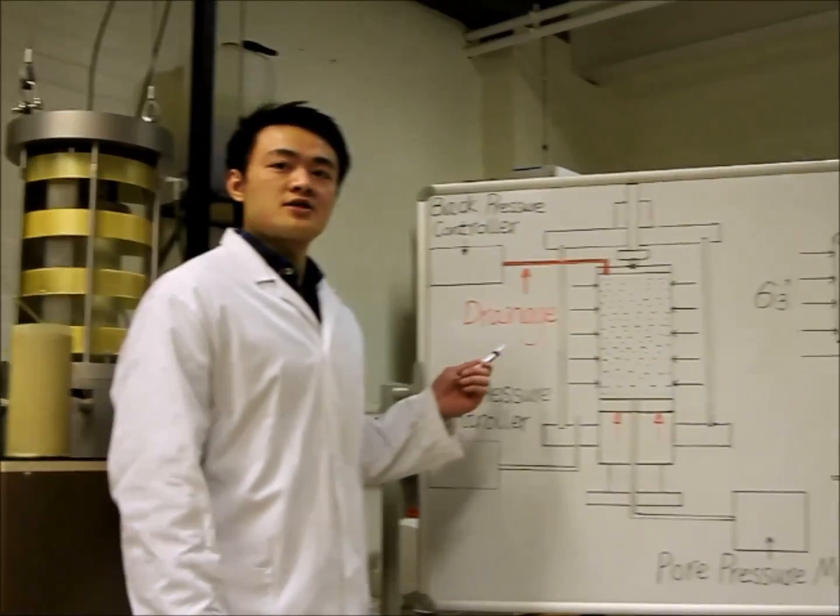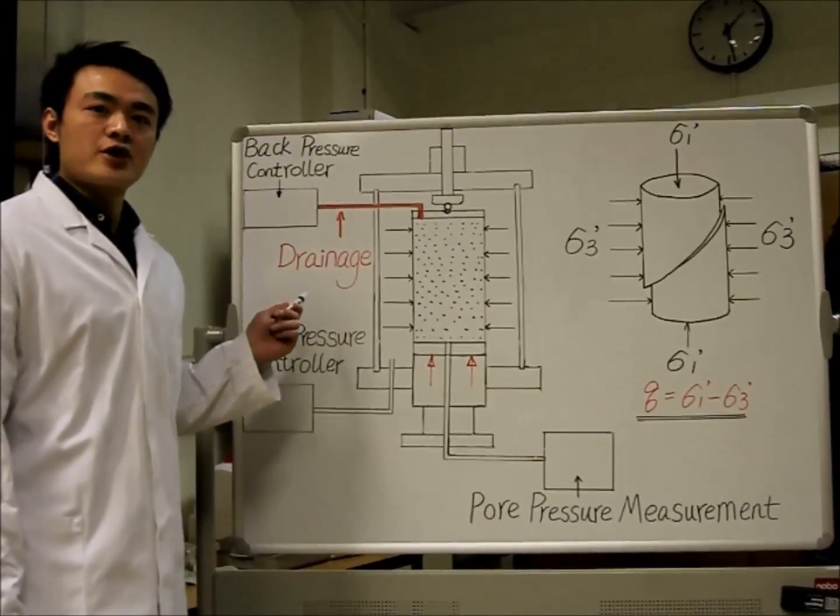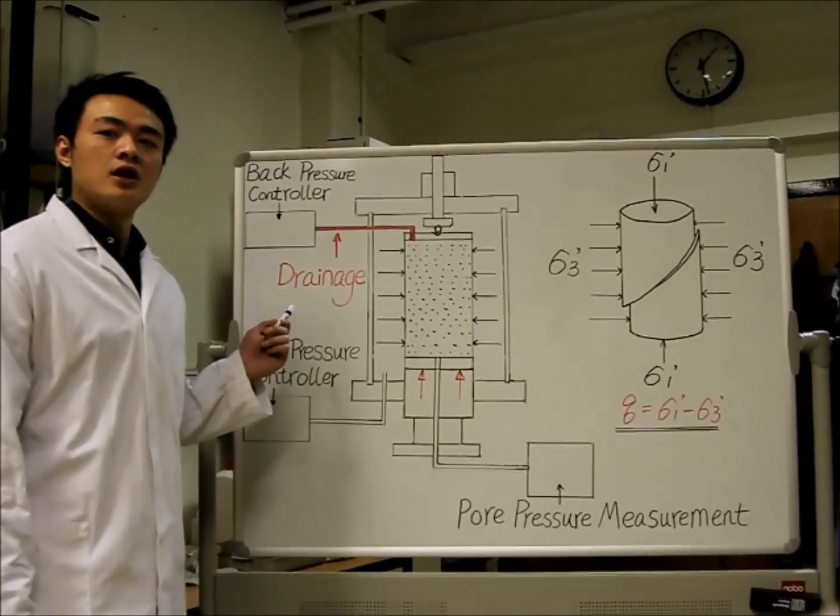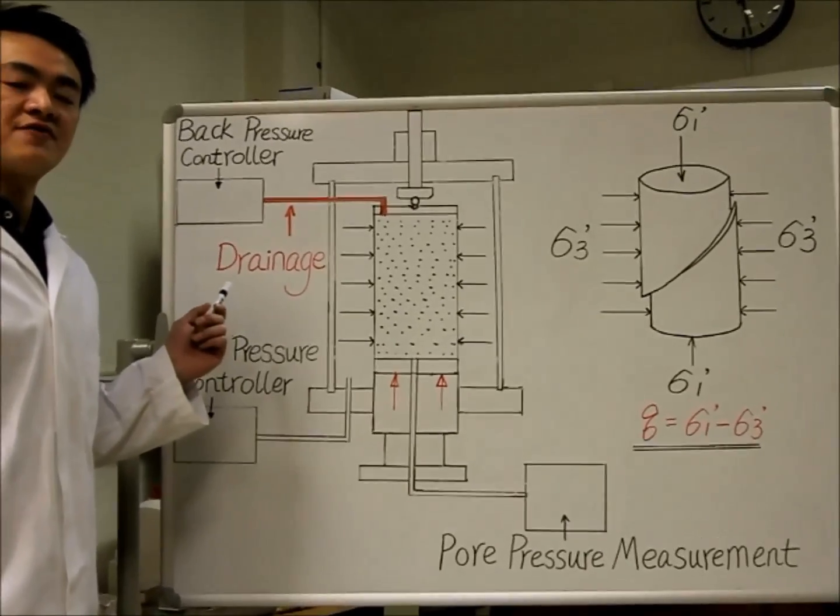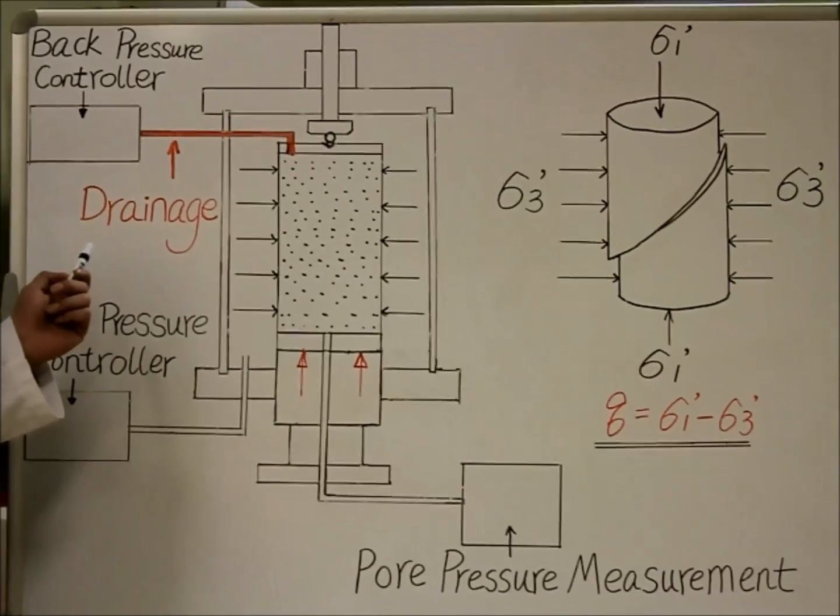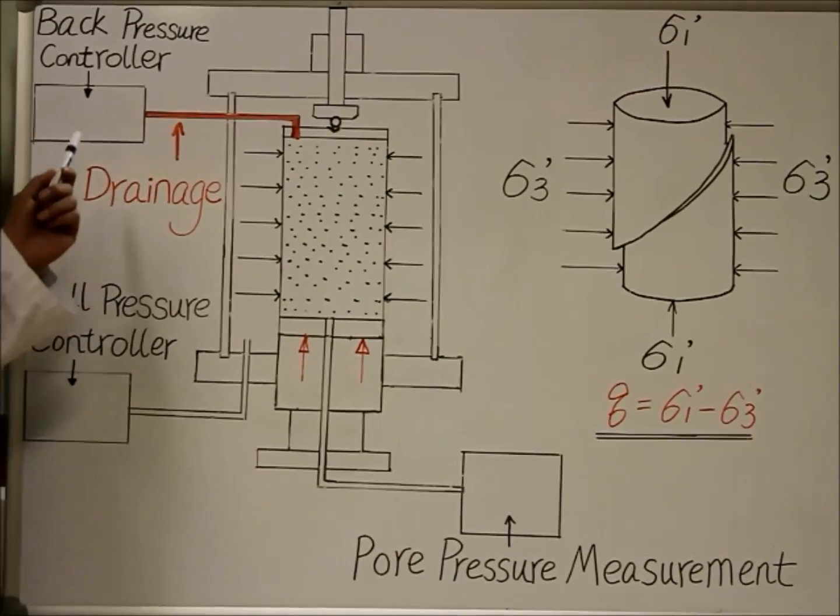This is the schematic diagram of the Drained Triaxial Compression Test. During the test, constant confining pressure and back pressure are maintained by the two pressure controllers.